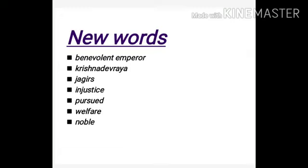Next is Krishnadevaraya — K-R-I-S-H-N-A-D-E-V-A-R-A-Y-A — Krishnadevaraya. He was the king of Vijayanagara. Next is jagirs — J-A-G-I-R-S — jagirs. Jagirs means property or place.